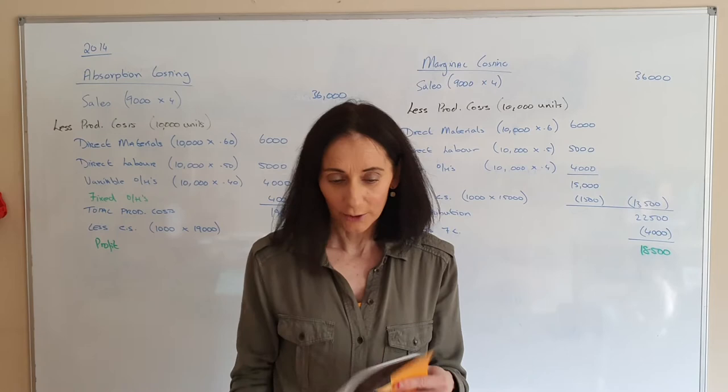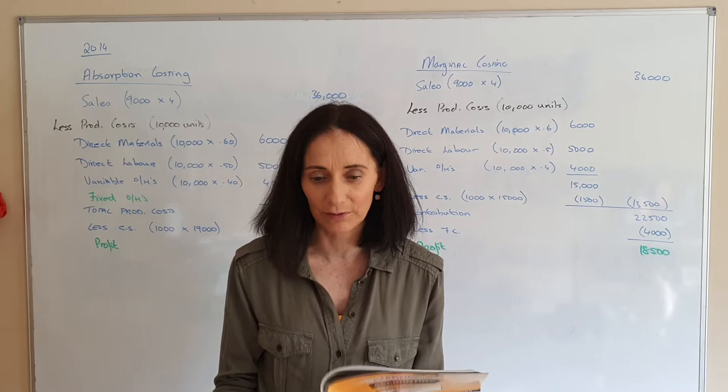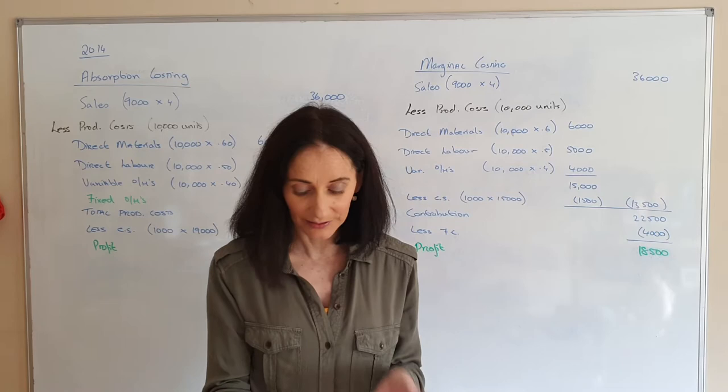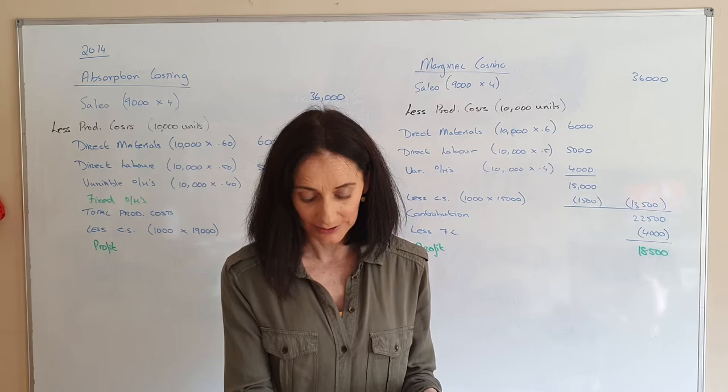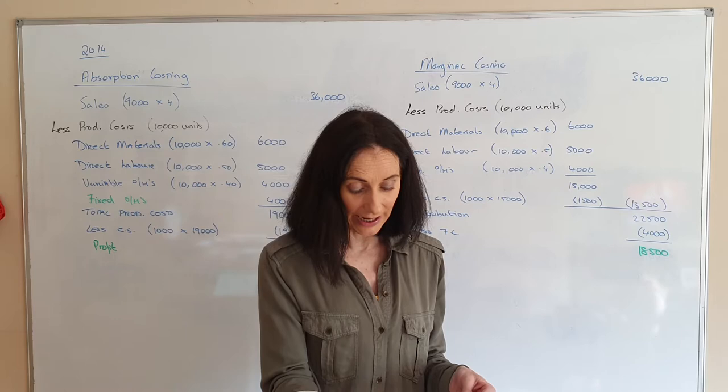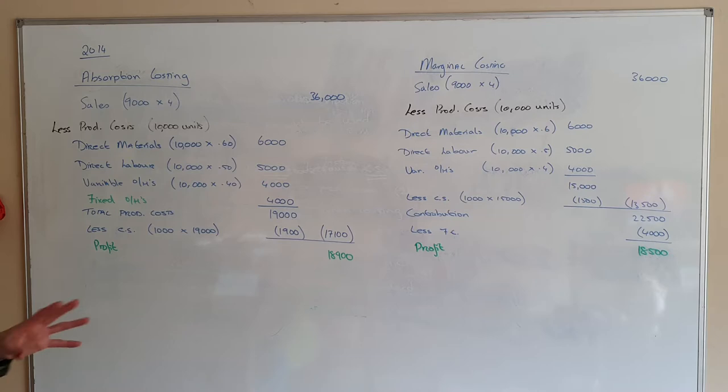I'm doing 2014 question 8, part B. This is something we were meant to cover in the classroom before coronavirus on flexible budgeting. Part B — this hasn't come up in a while, so you should expect something like this if you're doing a marginal costing question. It says: prepare a marginal costing and absorption costing statement. I have the two of them on the board.